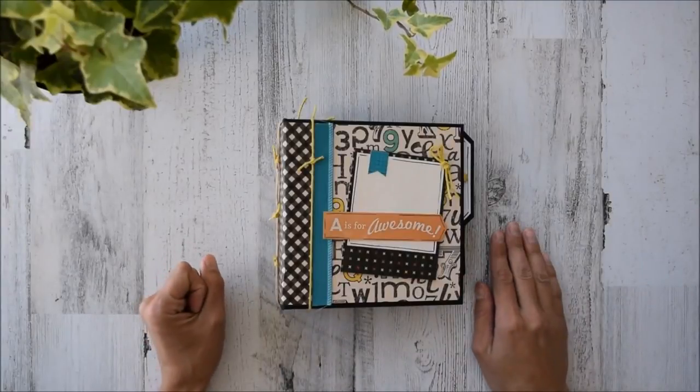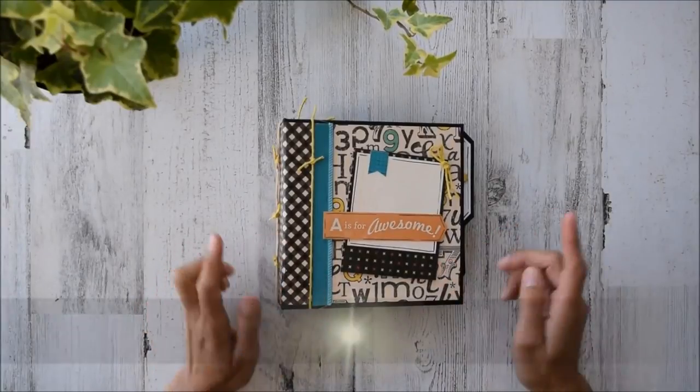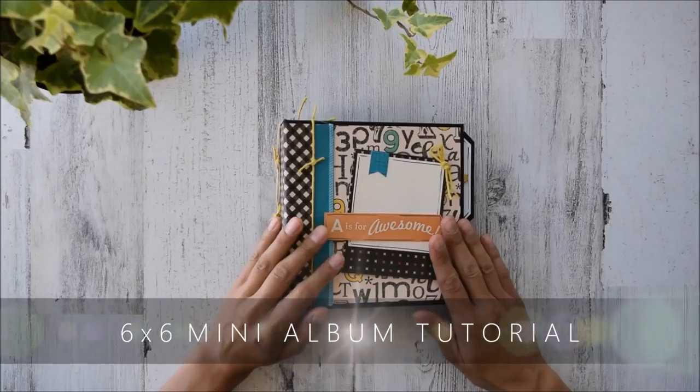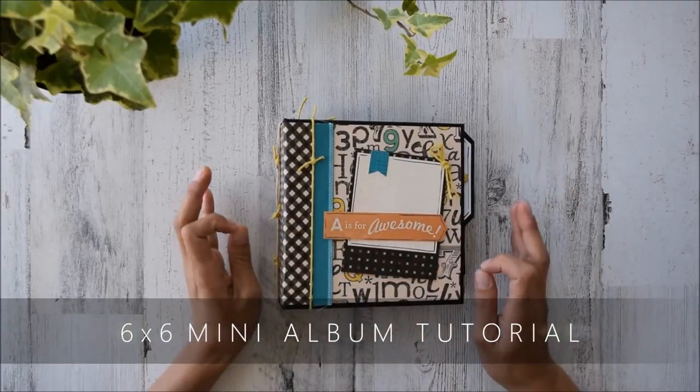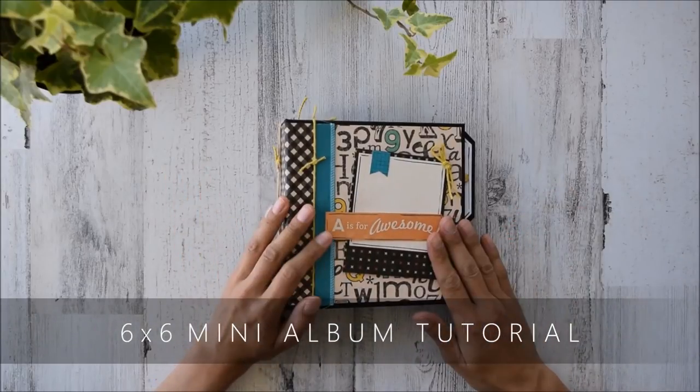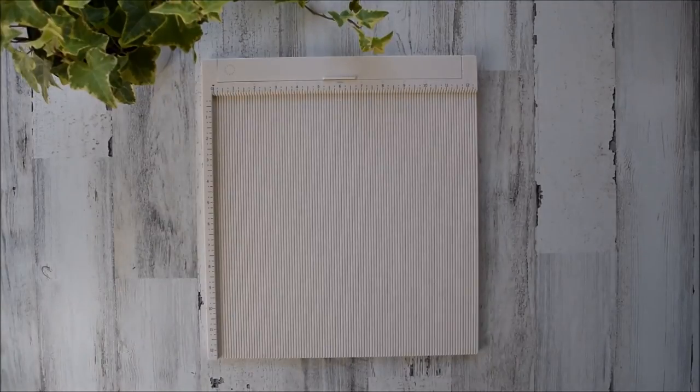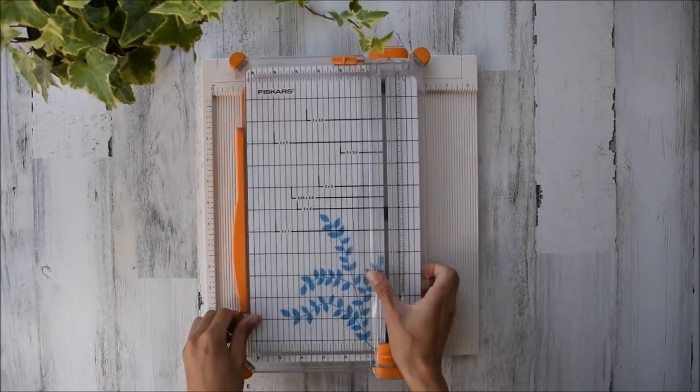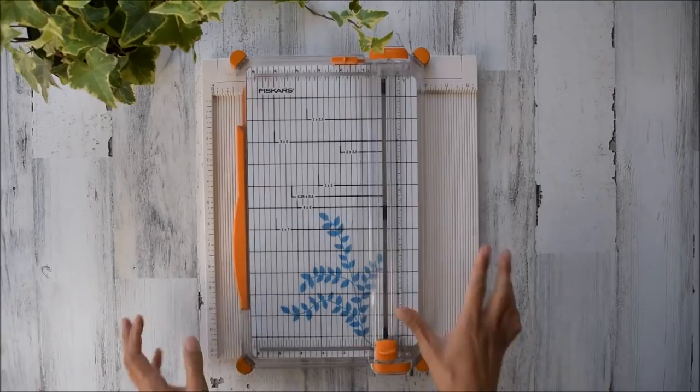Hello everyone, it's Frances with Your Book of Memories. Welcome to the six by six mini album tutorial. This one's super easy and super fast and beginners can make this of course. I need a paper trimmer. This one's my favorite. I absolutely love Fiskars. Easy to store, easy to use.